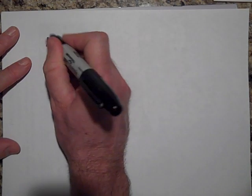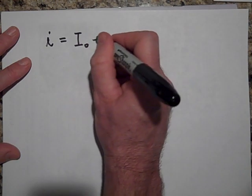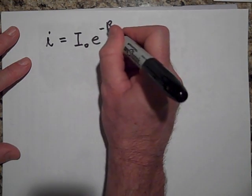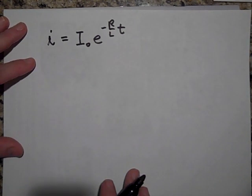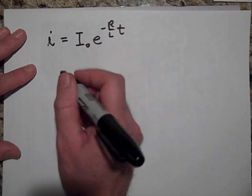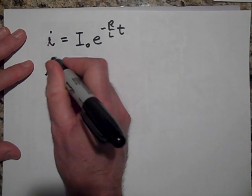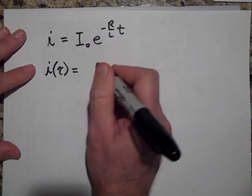If it's a decay graph, it's even a little more simple than that. Our decay graph looks something like this. If you'll remember, it's I initial e to the R over L times T, excuse me.